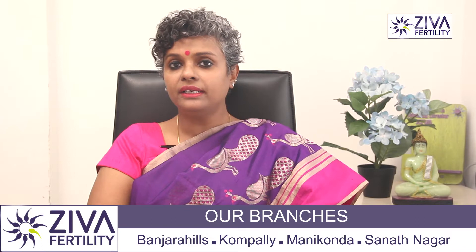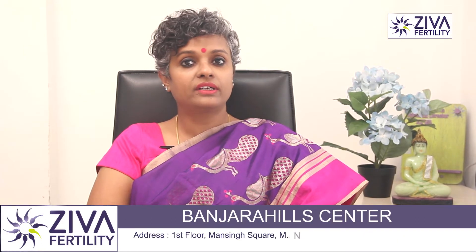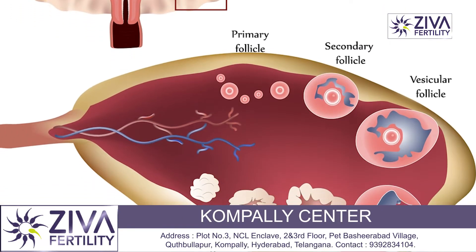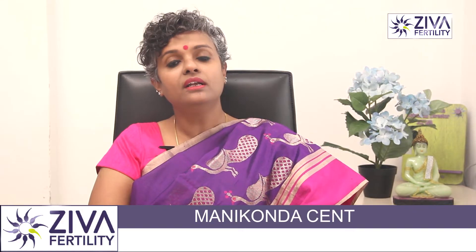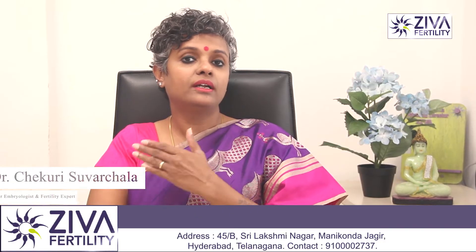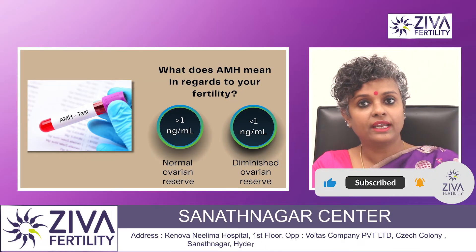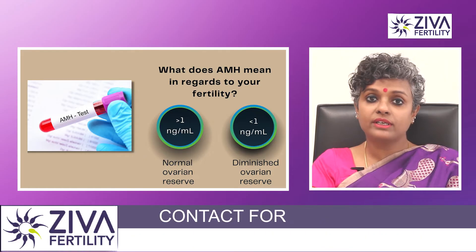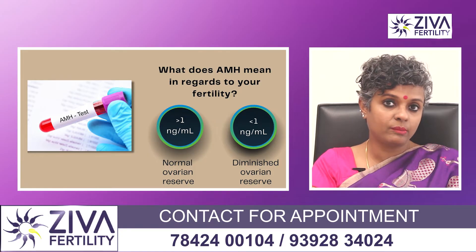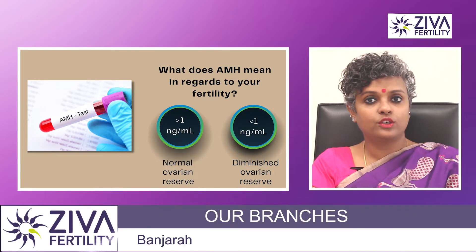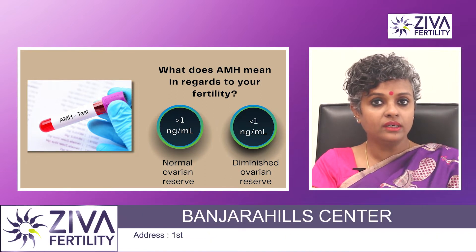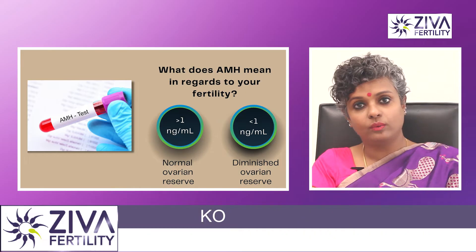So what does it indicate in terms of your fertility? AMH is an important fertility test that tells us about a woman's ovarian reserve as it stands on that particular day. Whether you get it done on day two or day ten of your cycle, it is fairly consistent throughout the month and particular to your age. High AMH values — greater than 1 nanogram per ml — usually signify a normal ovarian reserve.